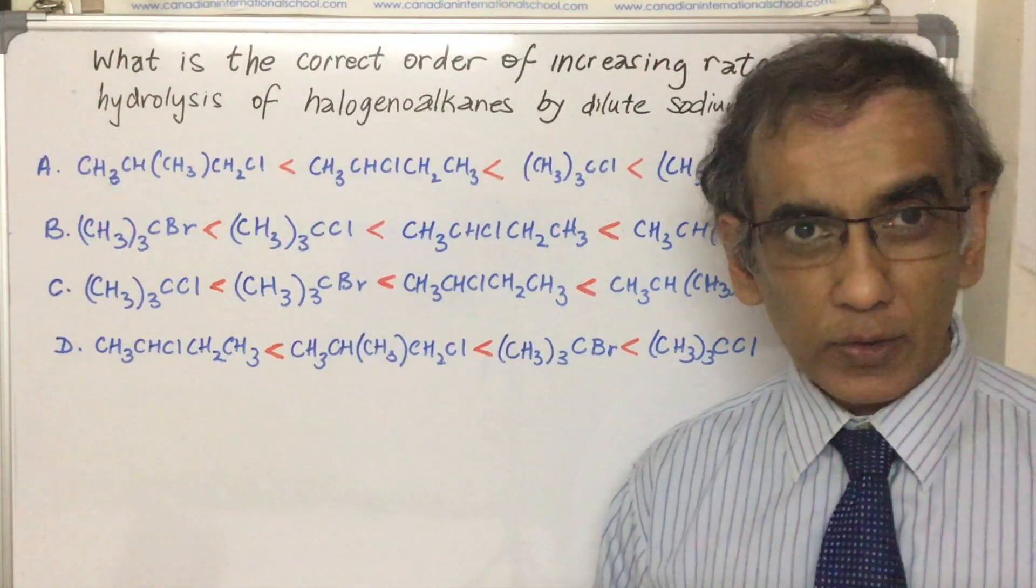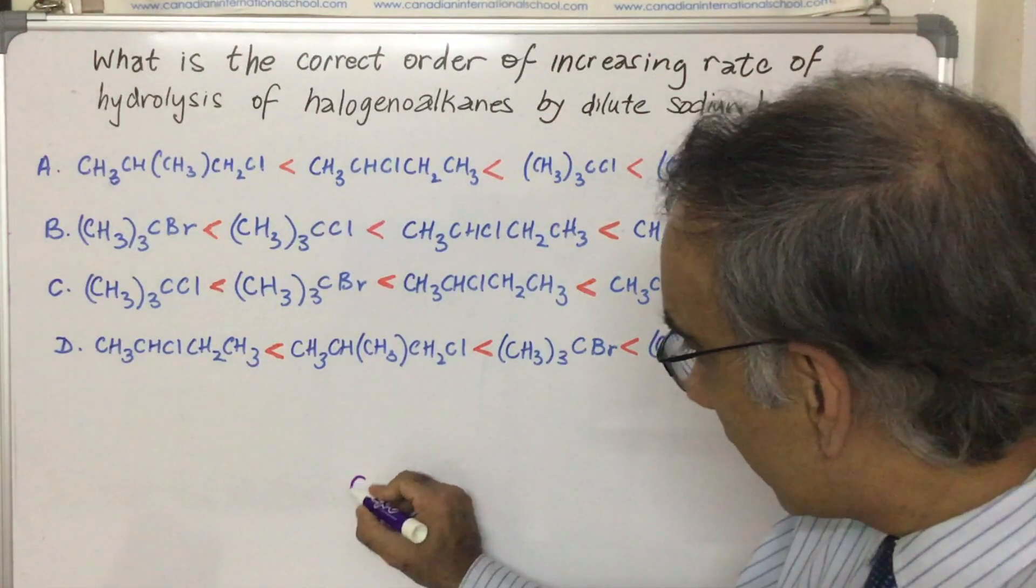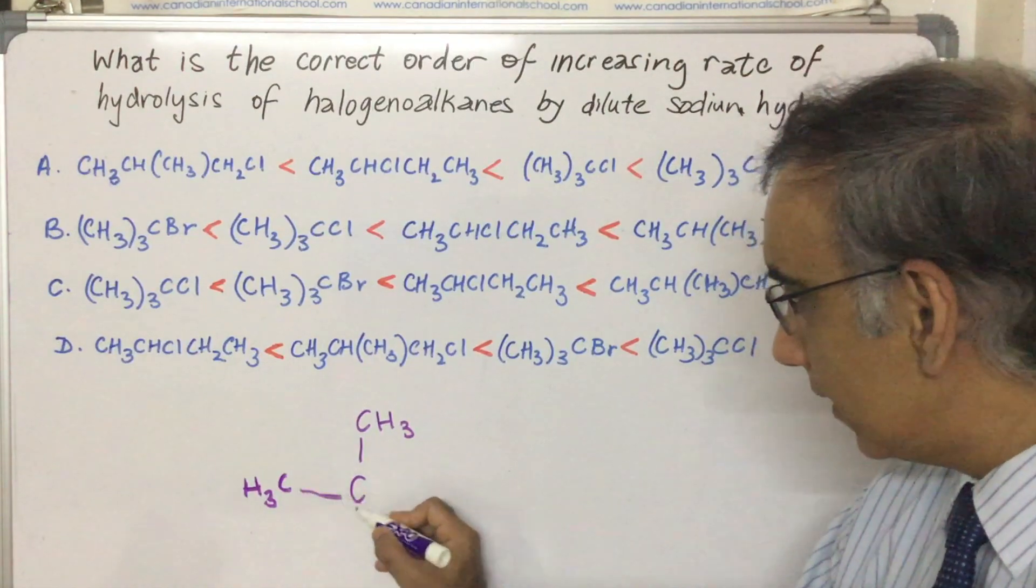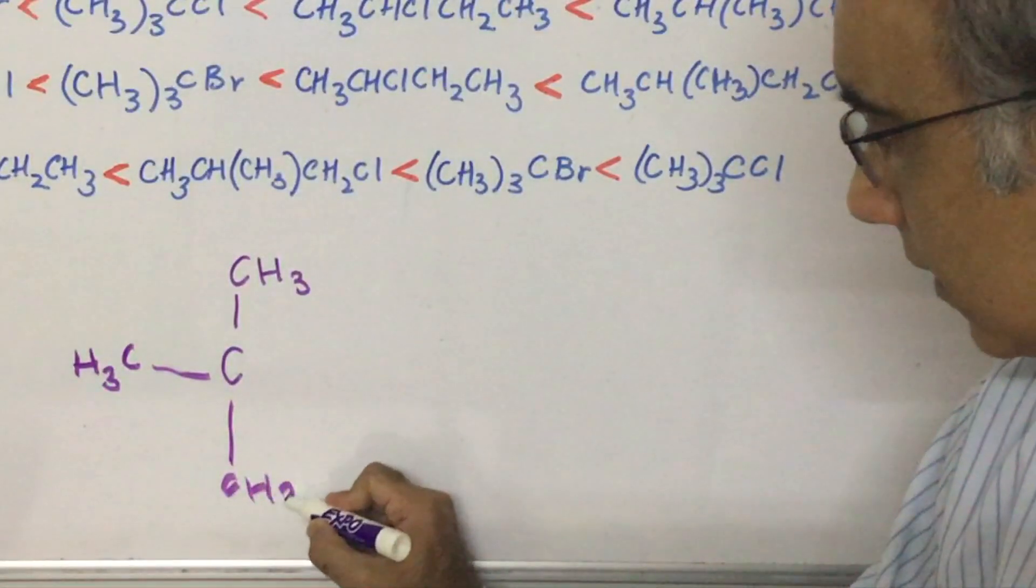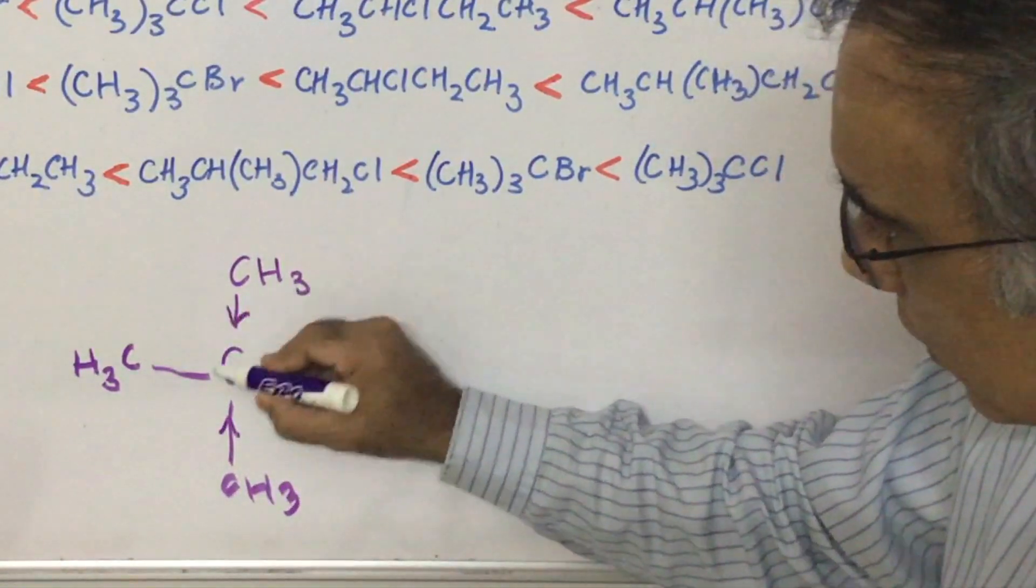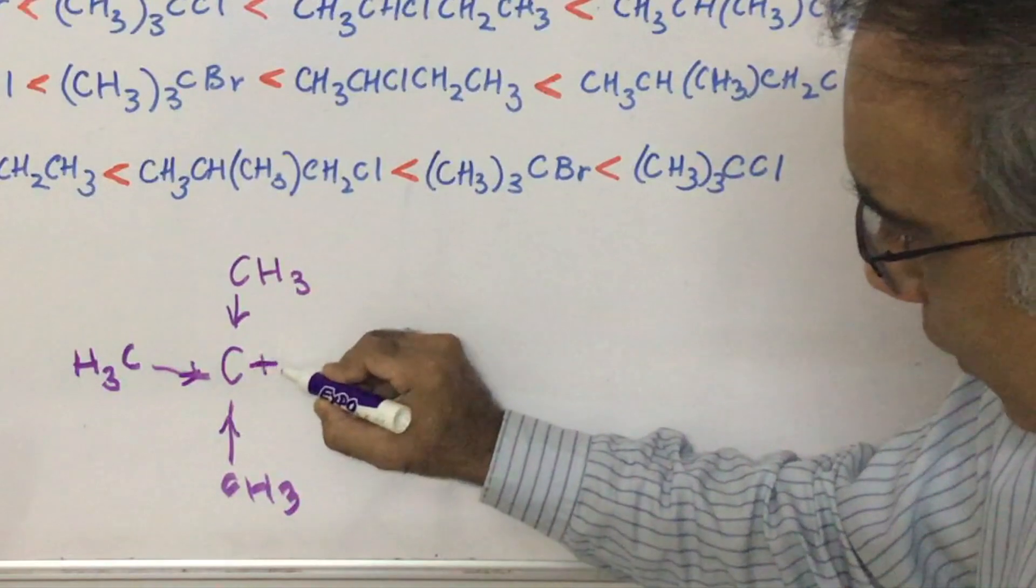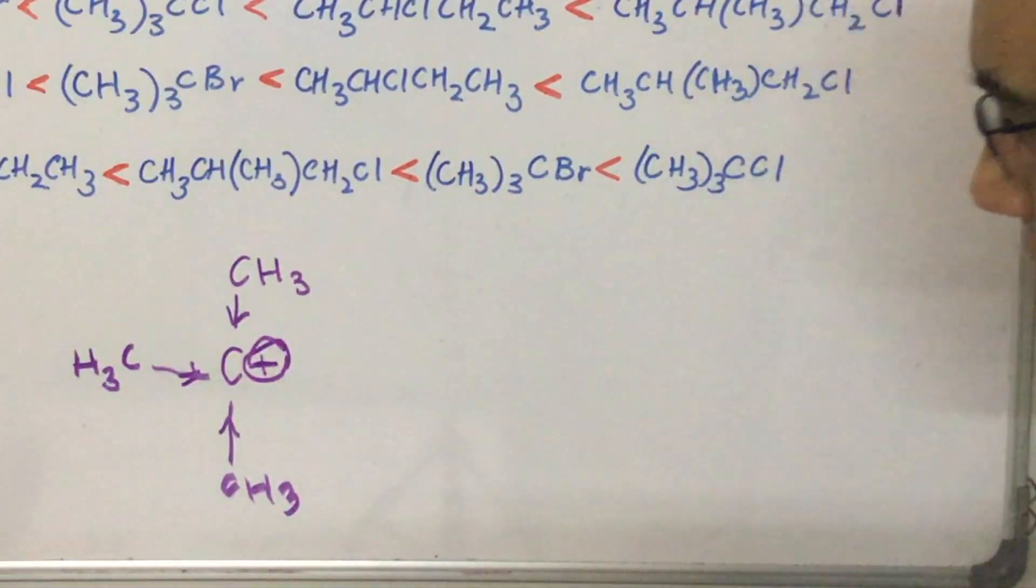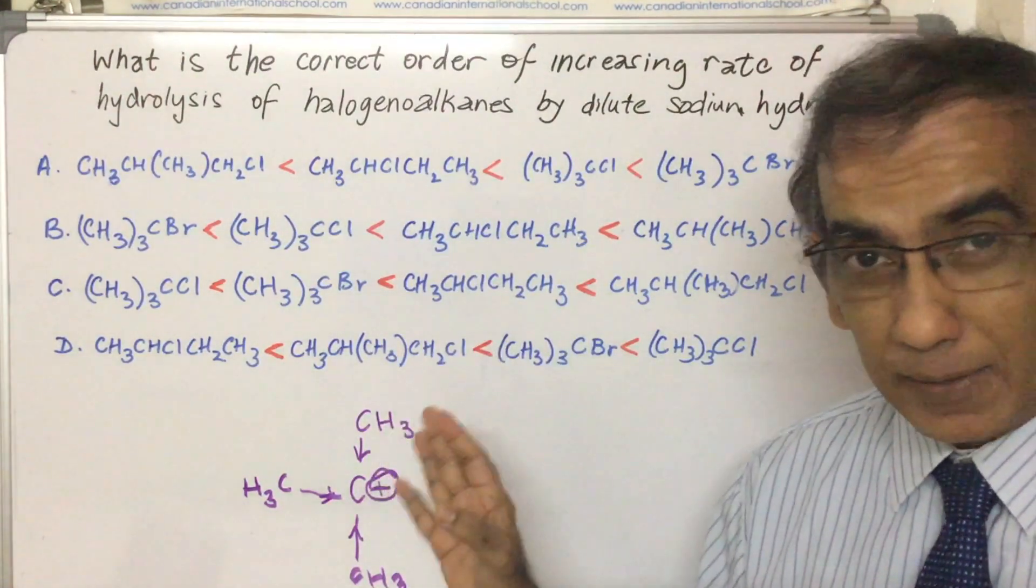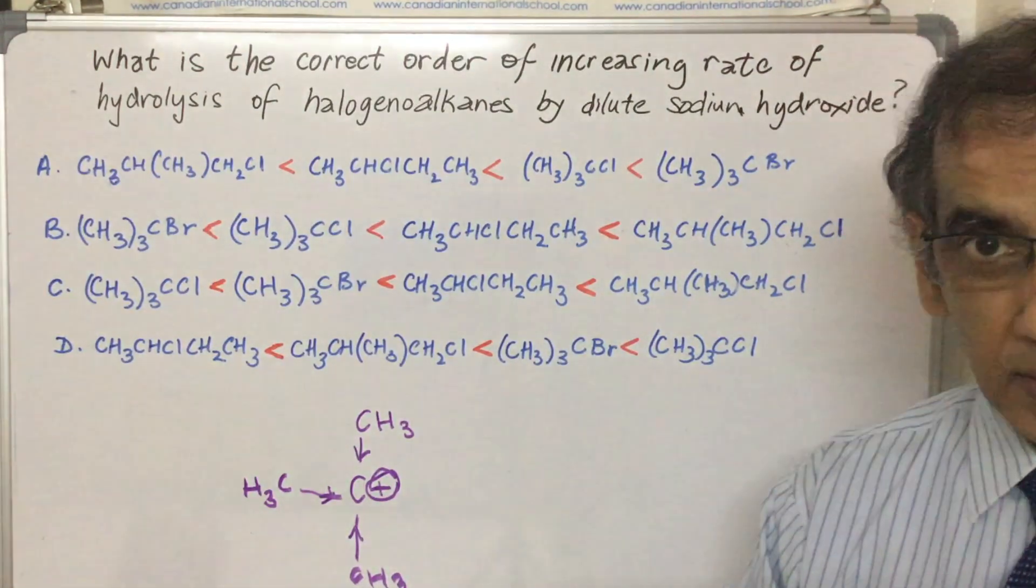When you have three CH3s all pushing electrons towards the central carbon here in the structure, then you could have a positive charge actually existing here for a while. This is called a carbocation. Whichever structure here favors the existence of a carbocation, that is the one that is most likely going to undergo hydrolysis by sodium hydroxide.